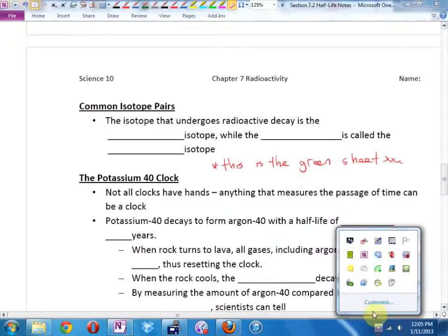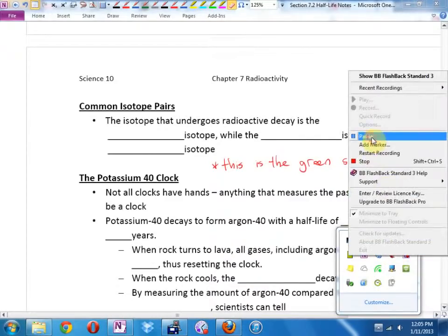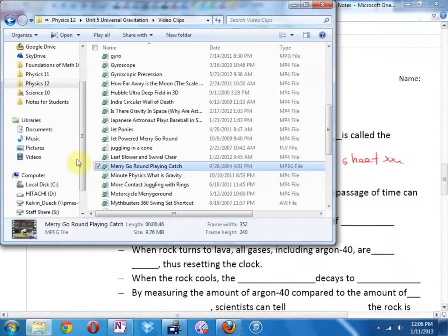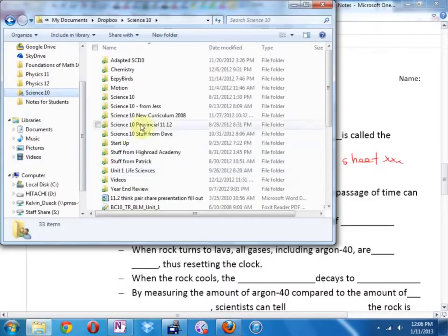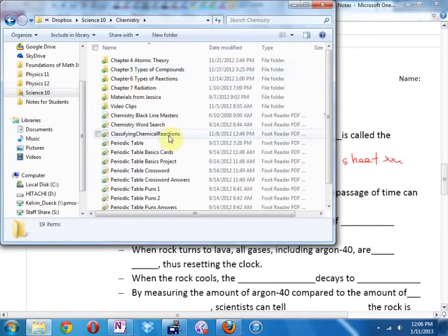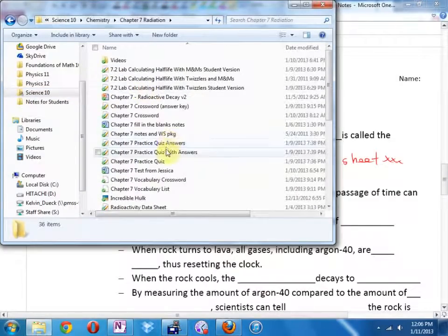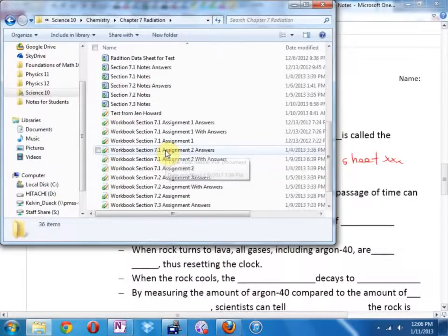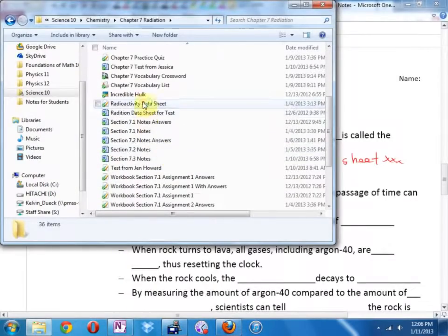Hello, my angel. Glad you made it. So we have the common isotope pairs. I have a copy of it here. Let's get it in front so we can look. Radiation. Chapter 7. I saw the data sheet where it is. Right there.